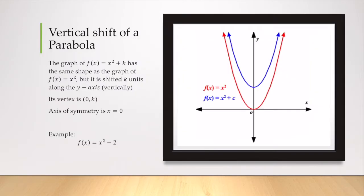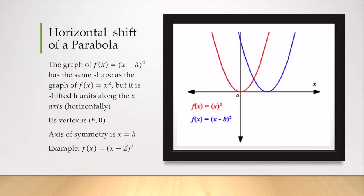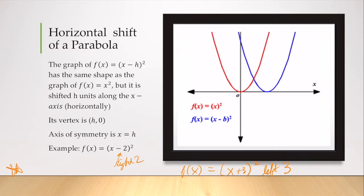Friendly reminder that if I have a function that's a parabola and I add a constant, that's going to shift my graph k units along the y-axis. So here the graph is shifted down 2. I can also have a horizontal shift — the horizontal shift is opposite. So f of x equals x minus 2 squared is actually shifted to the right 2. If I have f of x equals x plus 3 squared, that's shifted to the left 3. You can review this in chapter 1 if you're not 100% confident in horizontal and vertical shifts of parabolas.